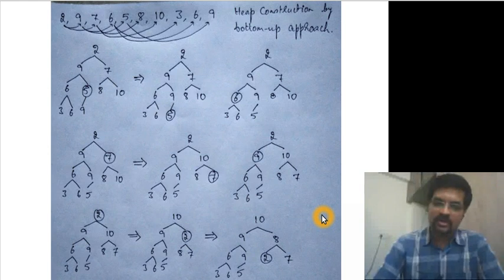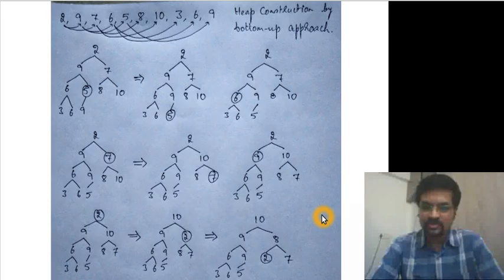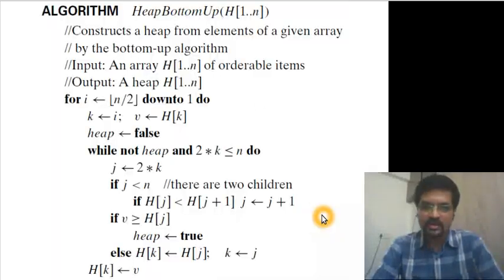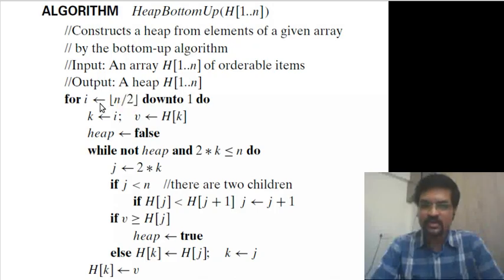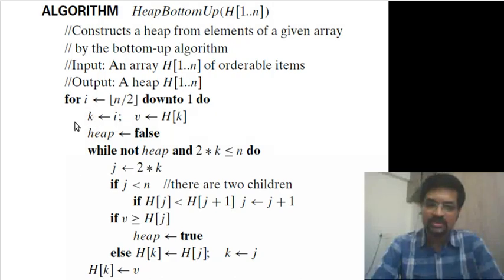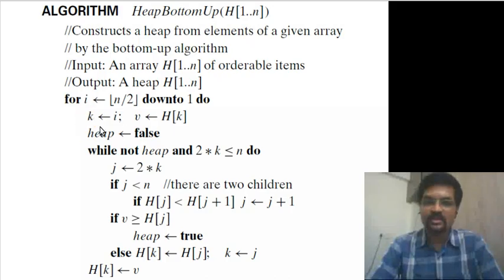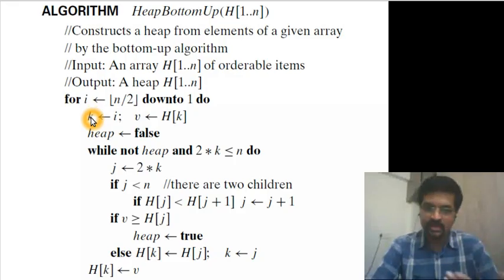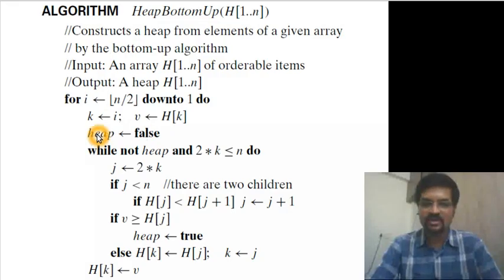Now let's look at the formal algorithm. Given an array of 1 to n elements to be converted into a heap, we start from the last non-leaf node at floor of n by 2 and go up to the root at index 1. At every iteration the subtree starting from index i should become a heap. The element at i may trickle down — k is the index tracking that trickling element and v is the element being trickled down.